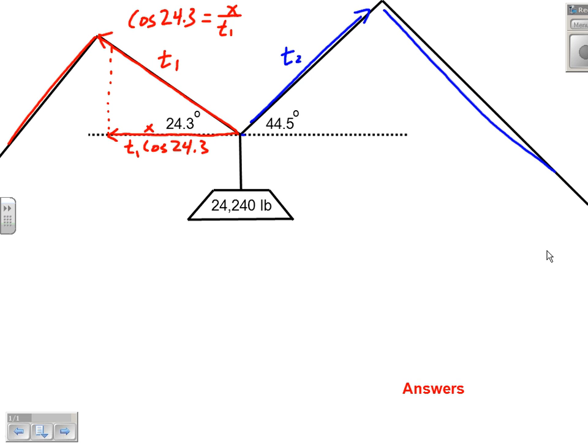Likewise, there is a horizontal component pulling to the right on T2. If I temporarily call it x, then I could say that it is also cosine. Cosine 44.5 is adjacent x on T2, making this guy's horizontal component, if I multiply both sides by T2, T2 cos 44.5.